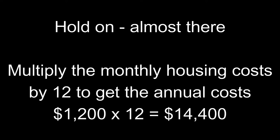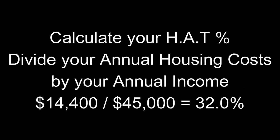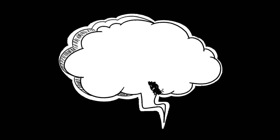Multiply the monthly housing costs by 12 to get the annual costs. In our example, our annual housing costs are $14,400. Let's assume that our annual household income is $45,000. To calculate your HAT percentage, you divide your annual housing costs by your annual income. In our example, our HAT is 32%.